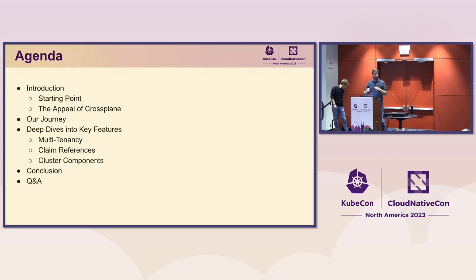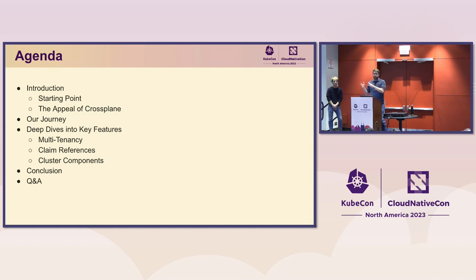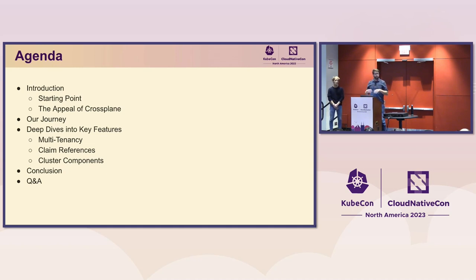We are going to cover Clement's company and his team — he's a platform engineer at a company called ConsenSys. We're going to talk about where they started, some of the pain points they had, finding Crossplane and what they were hoping it could solve, then the journey to their successful platform. We'll dive into three key areas of functionality, wrap up with conclusions, key lessons, and Q&A.